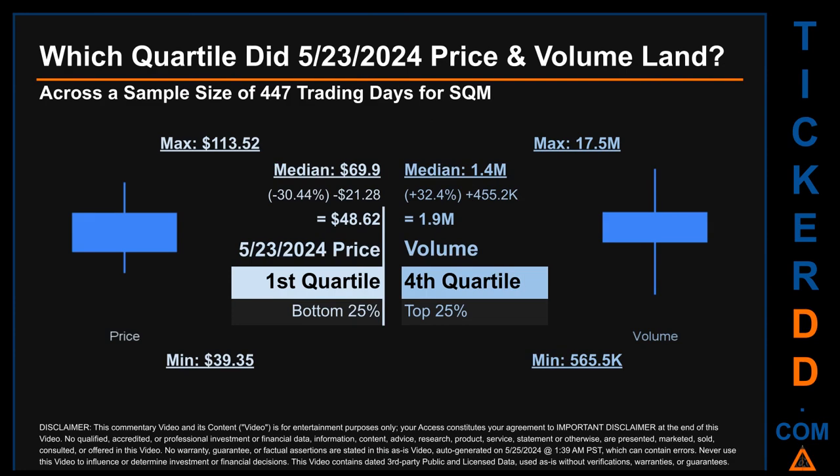Hello, my name is Maria. Which quartile did May 23rd, 2024 price and volume land in, across a sample size of 447 trading days? The maximum end-of-day price for SQM was $113.52, while the minimum was $39.35. Within that price range, May 23rd's price of $48.62 landed within the first quartile, meaning it was within the bottom 25% of all sampled end-of-day prices. The day's volume landed within the fourth quartile, marking it within the top 25% of all sampled daily volume.